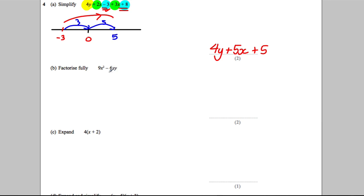Okay, factorise fully the following. The first thing you're going to do is deal with the number. Ask yourself, what number divides into 9 and 6? Or what number are 9 and 6 in its times tables? The biggest number you can think of is 3.